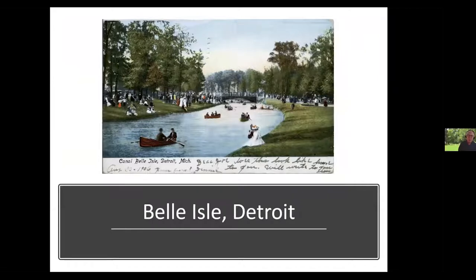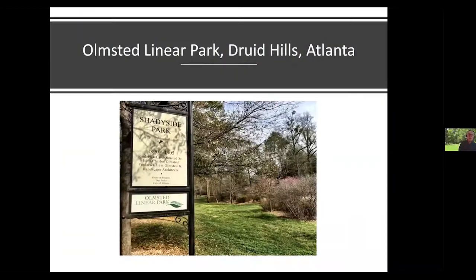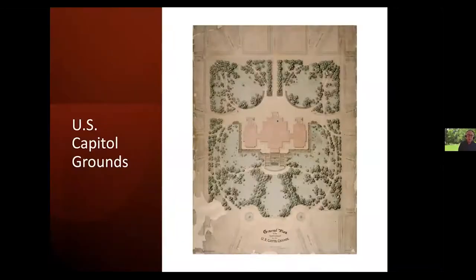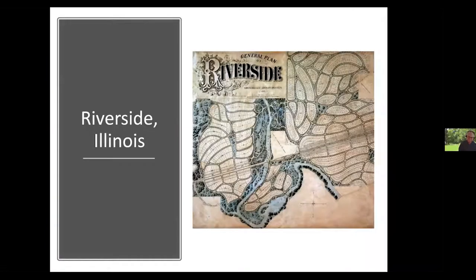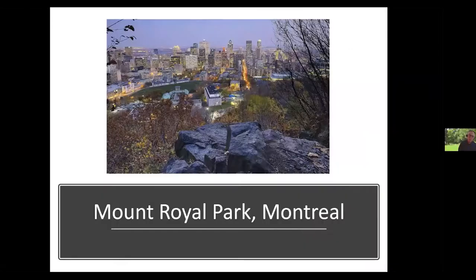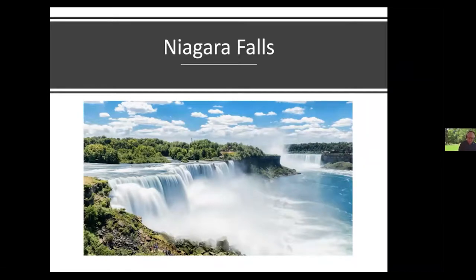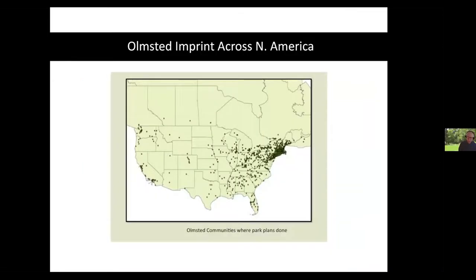I often like to use vintage art cards for some of my slides. Here is the Olmsted Linear Park in the Druid Hills section of Atlanta. The Biltmore Estate in Asheville, North Carolina. In Washington D.C., the U.S. Capitol Grounds. The green suburb of Riverside, Illinois. Mount Royal Park — Mont-Royal. And the Niagara Falls State Reservation on the New York side. Those are just a handful of the more celebrated masterful landscapes designed by Frederick Law Olmsted Sr.